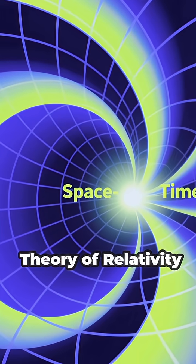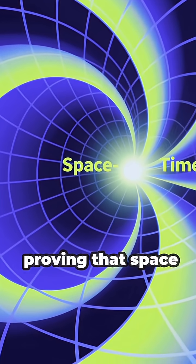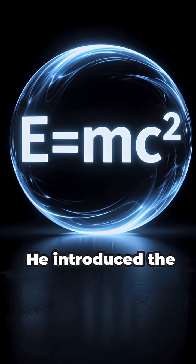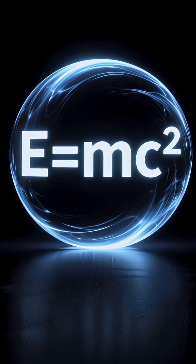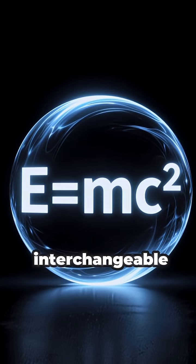Einstein's special theory of relativity challenged Newton's absolute concepts, proving that space and time are interconnected as space-time. He introduced the world's most famous equation, showing that mass and energy are interchangeable.